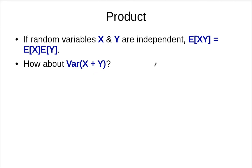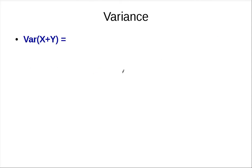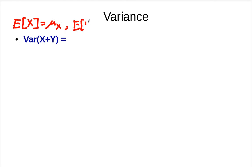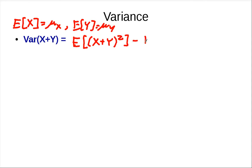So how about the variance of x plus y? Let's follow the first definition of variance and do some computation. Let's define the expected value of x to be mu_x, and the expected value of y to be mu_y, so that we have simpler terms. So the variance of x plus y, using the definition, is going to be the expected value of x plus y squared minus the expected value of x plus y, everything squared.